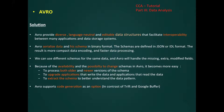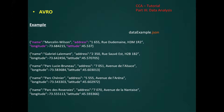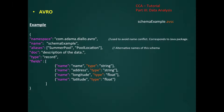Avro supports code generation as an option, in contrast to Thrift and Protocol Buffers. Let's consider this example: it's a JSON dataset containing the name, address, longitude, and latitude of pools in the city of Montreal.